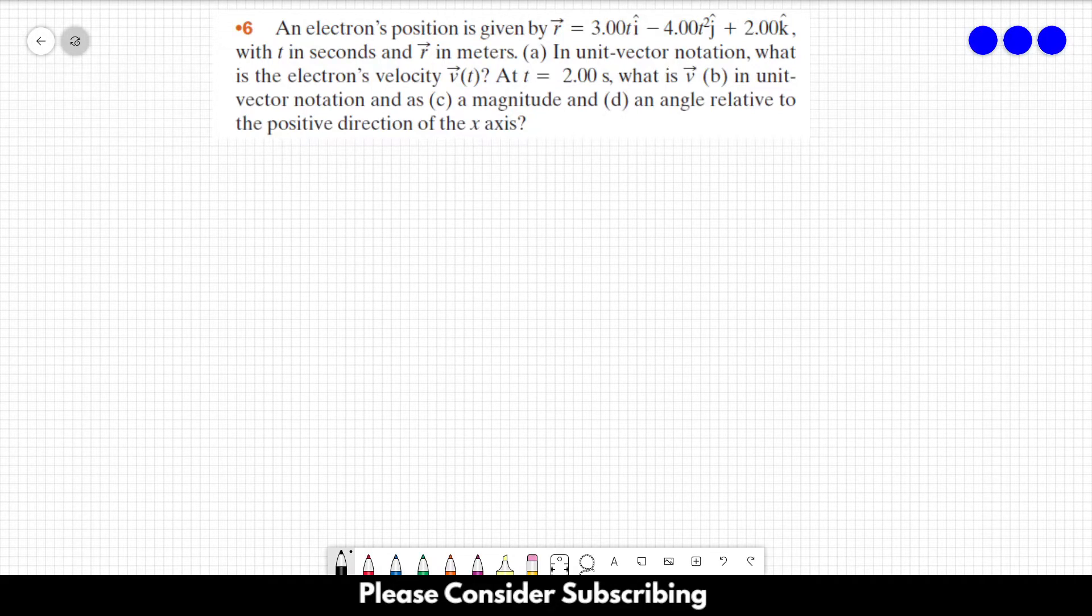Number 6. An electron's position is given by vector r. Let's write it down. Vector r, which is a function of time, is equal to 3t in the i direction, minus 4t squared in the j direction, plus 2 in the k direction.